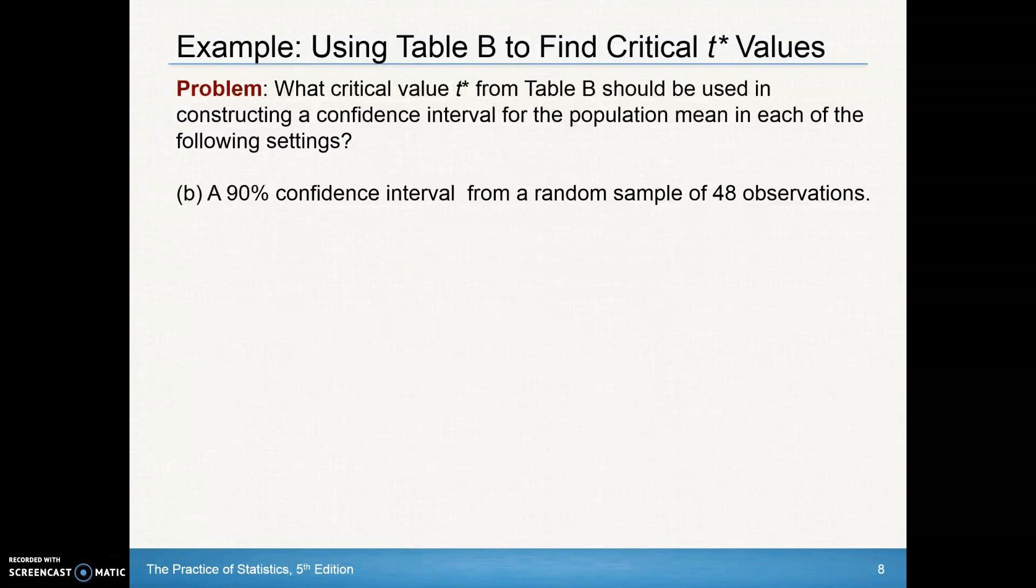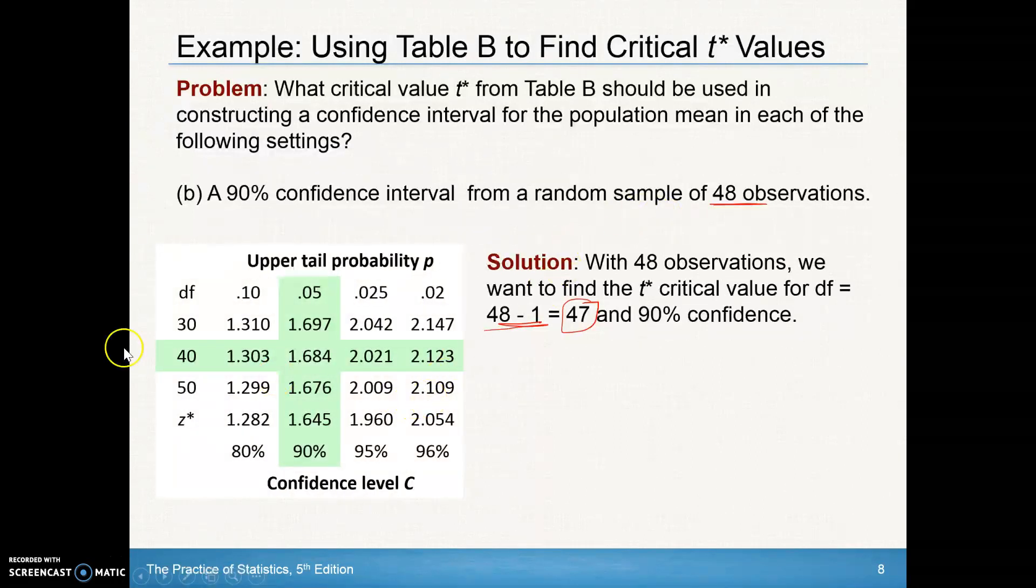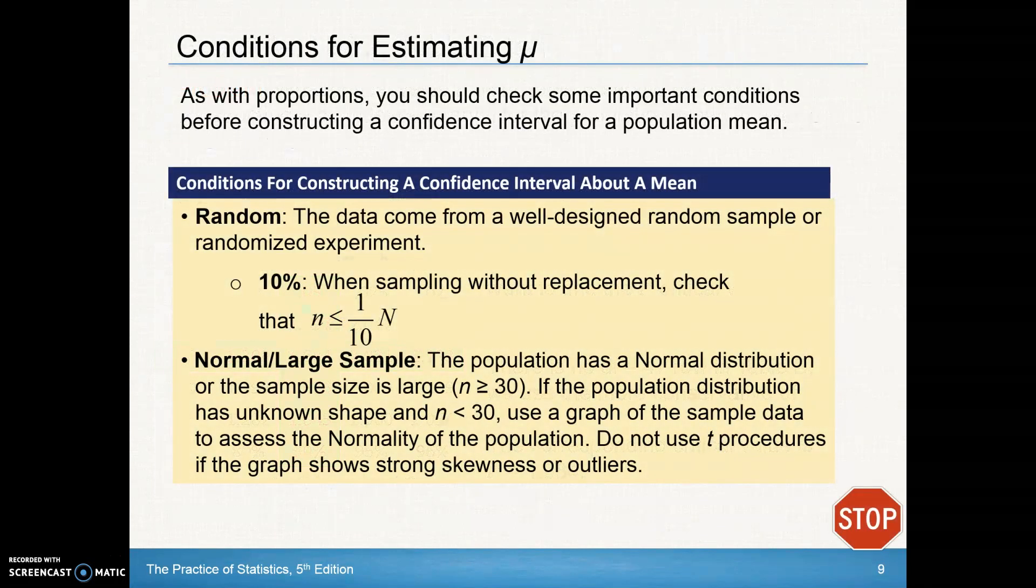A 90% confidence interval of a random sample of 48 observations. What critical t value from table B should be used? With 48 observations, you want to find the t-star critical value for degrees of freedom of 47. 48 minus 1, we're going to look up 47. But the problem is there's no 47 on the table. This table starts to go from 30 to 40 to 50. Well, the common rule is to be a little more conservative and to round down to the lowest, the lower one and use 40 here rather than the 50. And with a 90% confidence interval, you would have that 90% in between here, so you'd have 0.05 in each of the tails. The upper tail is 0.05, 40 degrees of freedom. We cross reference and have our t-star of 1.684.